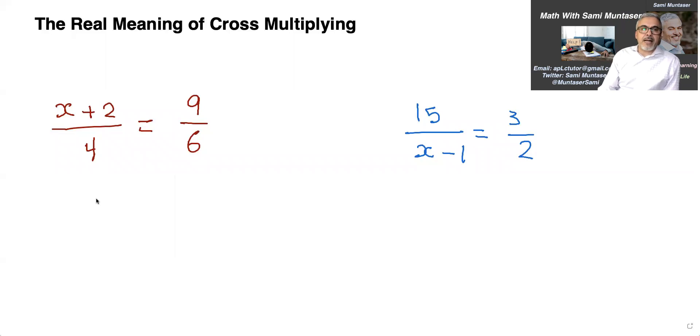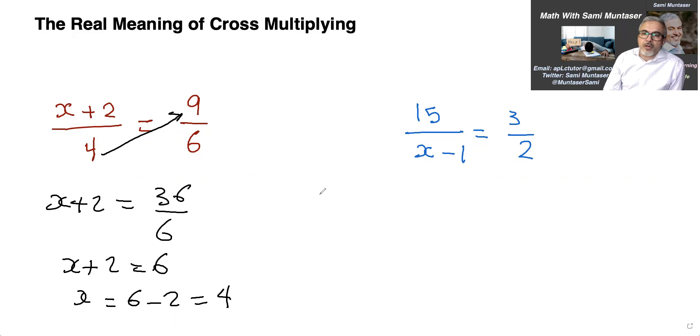So here's two more questions that I'm going to do. Now cross multiplying. You want to isolate for the x. Here is x plus 2. What you want to do in this one here you just want to cross the 4 only right now. So x plus 2 equals 36. 4 times 9 is 36 over 6. Now x plus 2 equals 6. Move the 2 to the other side. Becomes x equals 6 minus 2 which equals 4. So very quick.